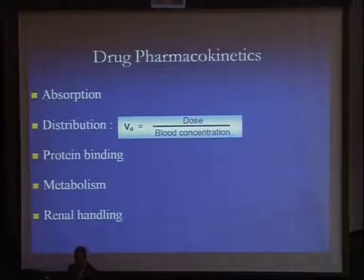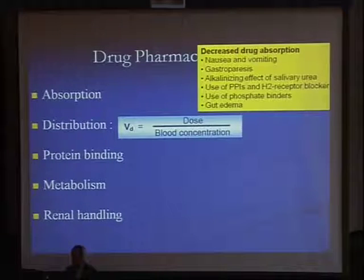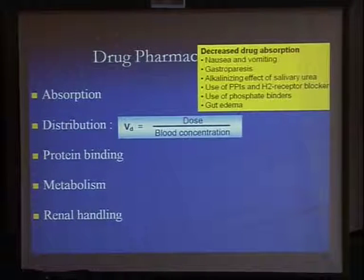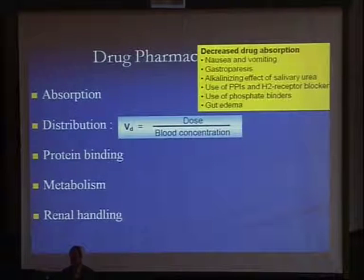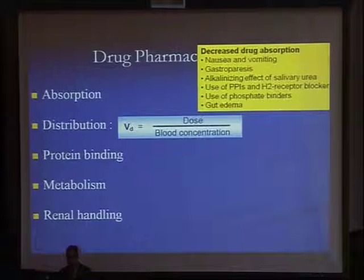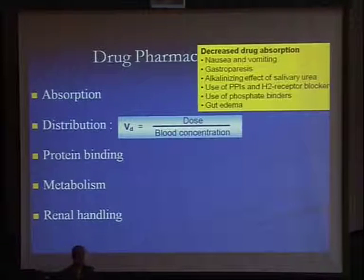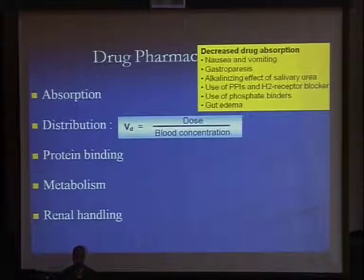Now let's see what happens to each of these steps when impaired kidney function occurs. With absorption, there is going to be a decrease in drug absorption because those patients have nausea and vomiting, gastroparesis, and because of the alkalinizing effect of urea, which changes the pH and impairs the absorption of drugs that need an acidic medium. The same thing occurs due to the use of proton pump inhibitors and H2 receptor blockers. Also, the use of phosphate binders forms insoluble complexes with many drugs and impairs their absorption, and you also have gut edema.